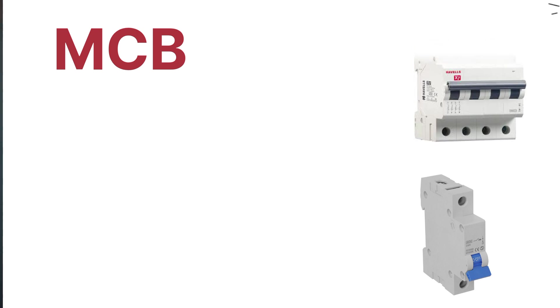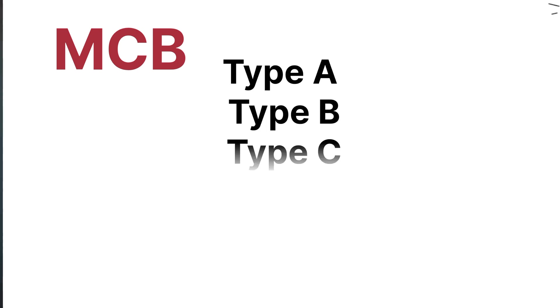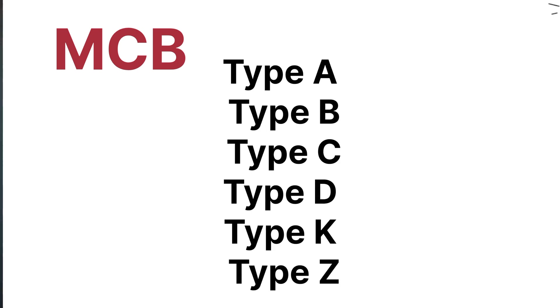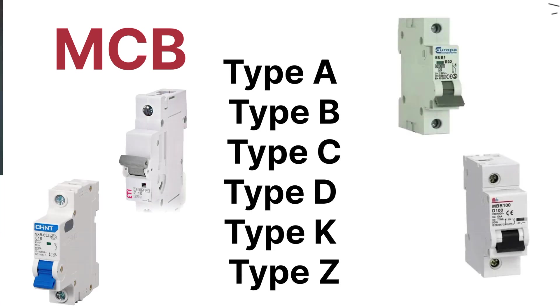Now let's talk about the types of MCBs available in the market. There are six types: the first is A type MCB, the second is B type MCB, the third is C type MCB, the fourth is D type MCB, the fifth is K type MCB, and the final one is Z type MCB.